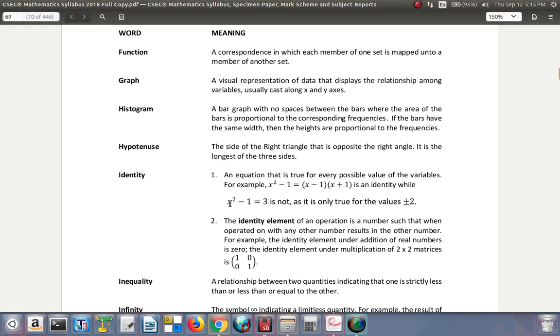It is only true if you put positive or negative 2. 2 squared is 4, 4 - 1 is 3. Negative 2 squared is 4, 4 - 1 is 3. If you put 5, 5 squared is 25, 25 - 1 is 24, not 3. So it is not an identity. You have only a limited number that works for it, so it is an equation.